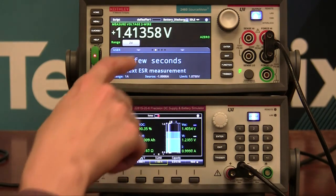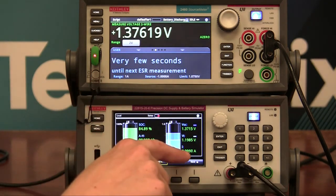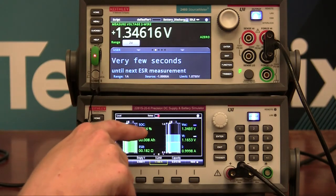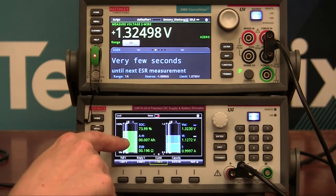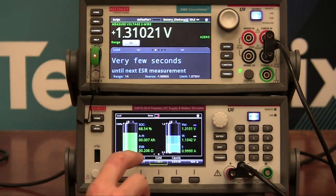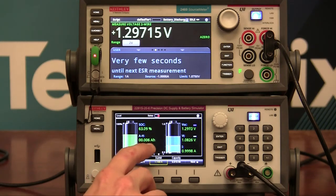So as you can see, this is discharging at an amp. And you can see the state of charge going down, down, down. And as it's going down, the amp hour capacity left in the battery is also going down.